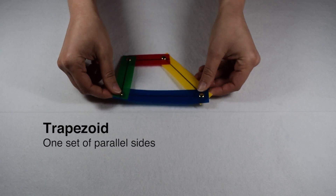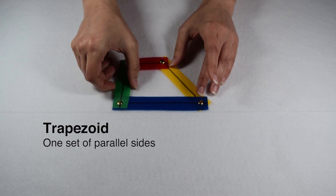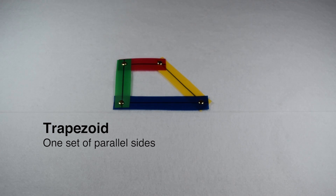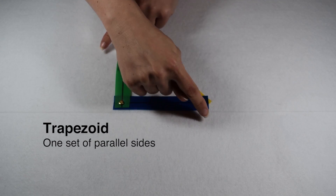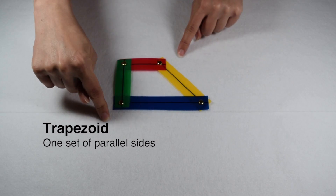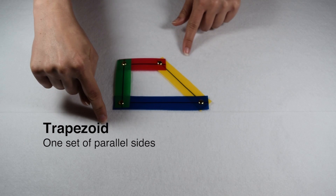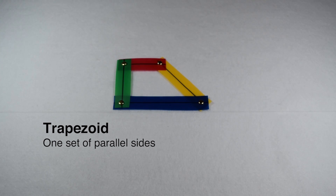We're going to start by looking at trapezoids. In order for a figure to be a trapezoid, it must be a quadrilateral and have four edges. From there, we need to look for one set of parallel edges, meaning there are two edges on the figure that are never going to cross, touch, or intersect with one another.